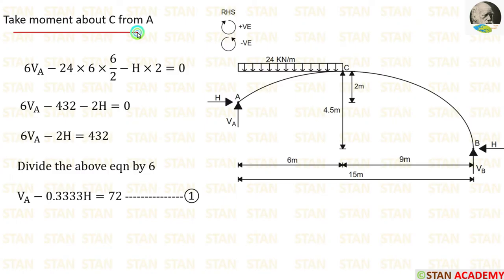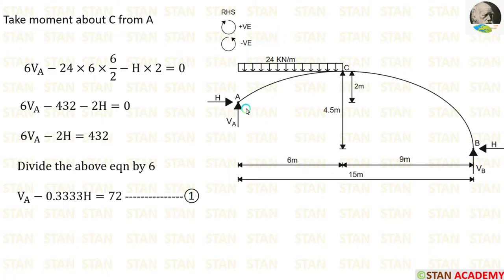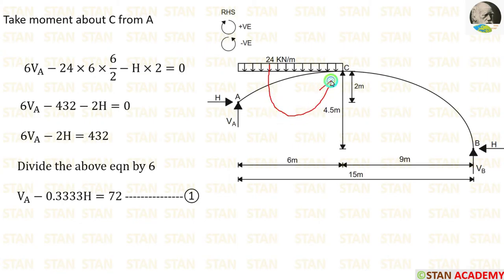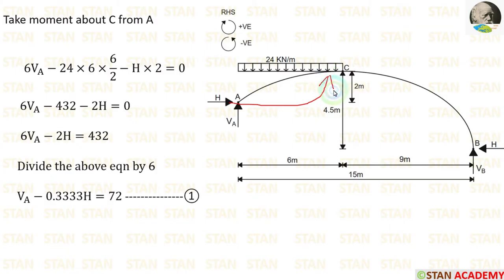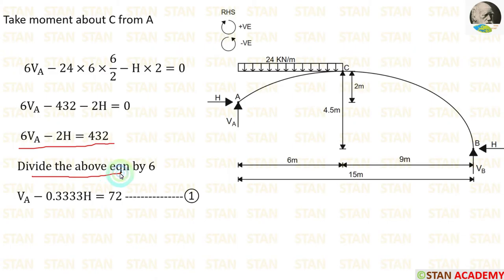Taking moment about C from A, moving towards the right-hand side: clockwise is positive, anticlockwise is negative. VA acts clockwise over 6 m, giving +6·VA. The UDL of 24 kN/m over 6 m acts anticlockwise, giving −24×6×(6/2). The horizontal thrust H acts anticlockwise over height 2 m, giving −H×2. Dividing the resulting equation by 6 gives Equation 1.